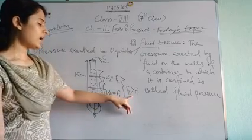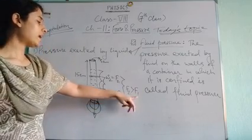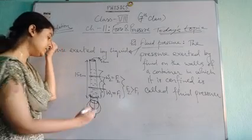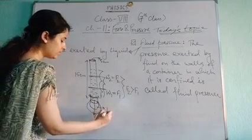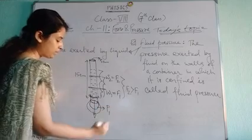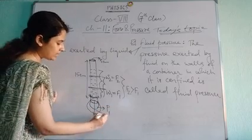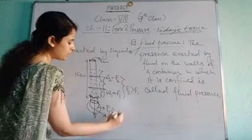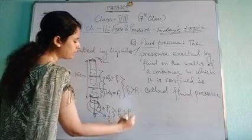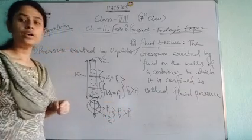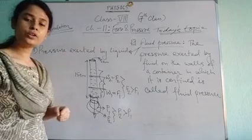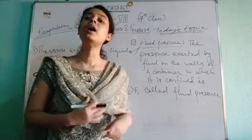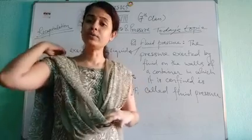When F2 is more than F1, the pressure P2 will be greater than P1. So from this we can conclude that with the increase of the height of the liquid column, the pressure created at the bottom of the container increases.